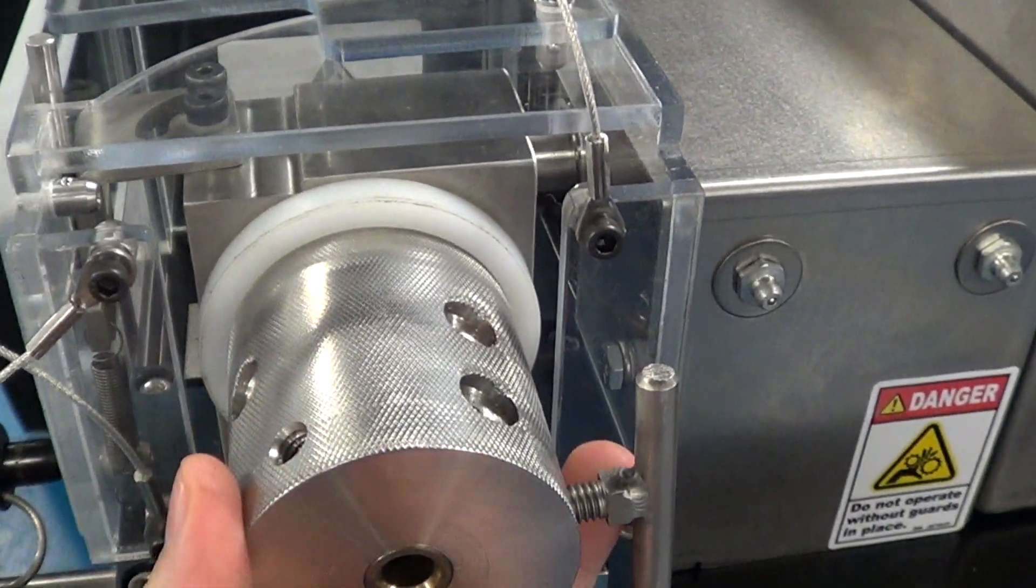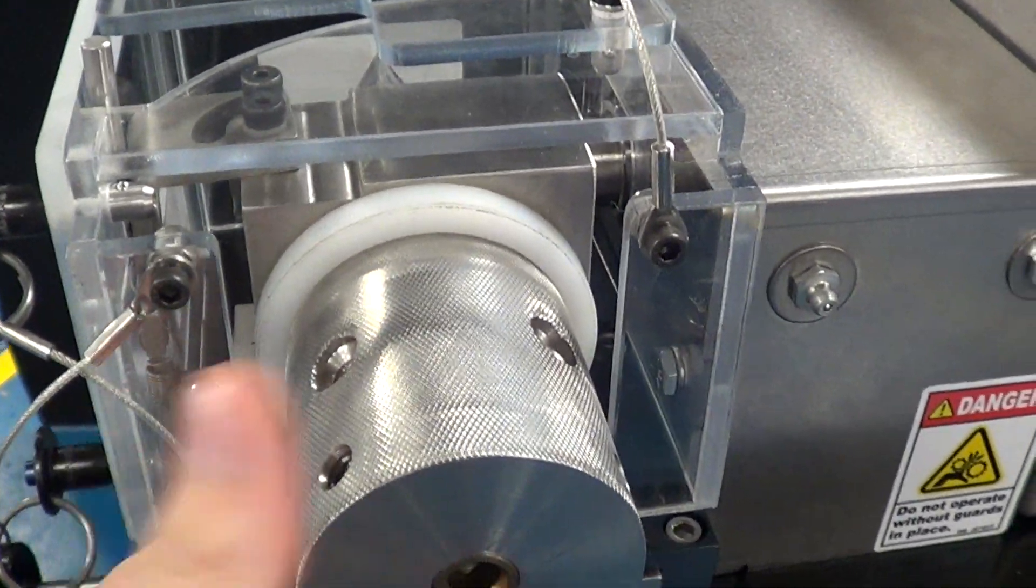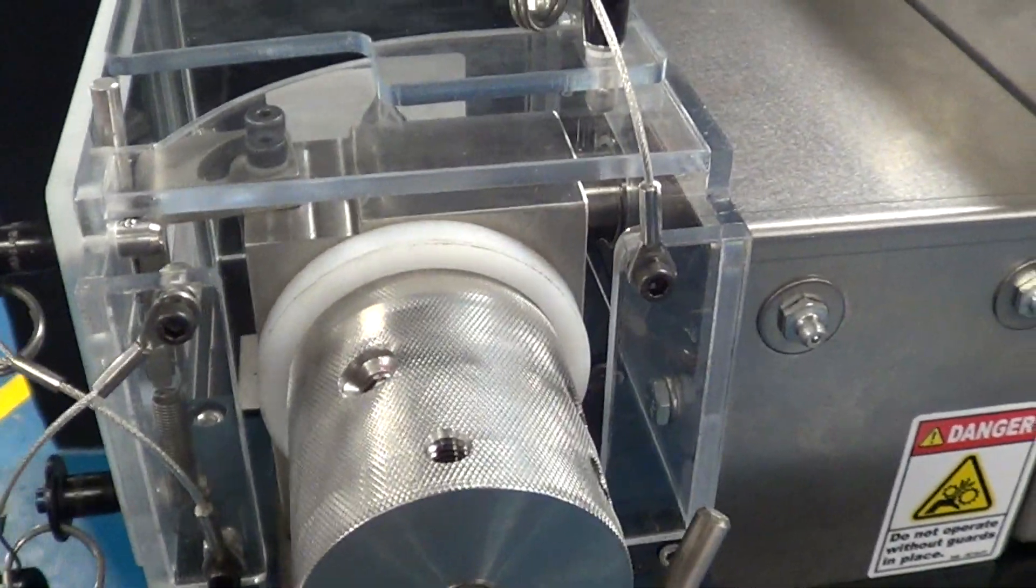The recommendation is to turn it 5 times if you have a 5-flute, and then turn it back 5 times to knock off any burrs.